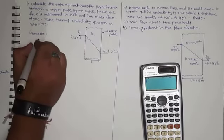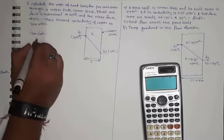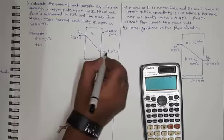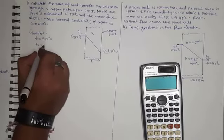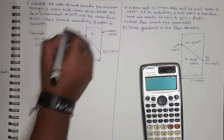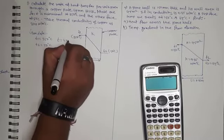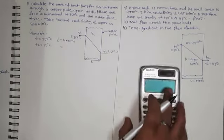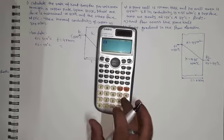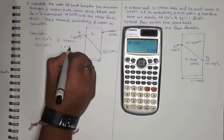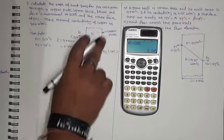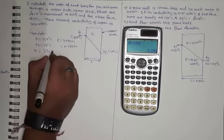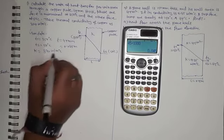Given data: Temperature on the hot side T1 is equal to 350 degrees Celsius. T2 is equal to 50 degrees Celsius. Thickness of the copper plate L is equal to 45 mm. Converting mm into meters: 45 divided by 1000 equals 0.045 meter. Thermal conductivity K is equal to 370 watt per meter degree Celsius.